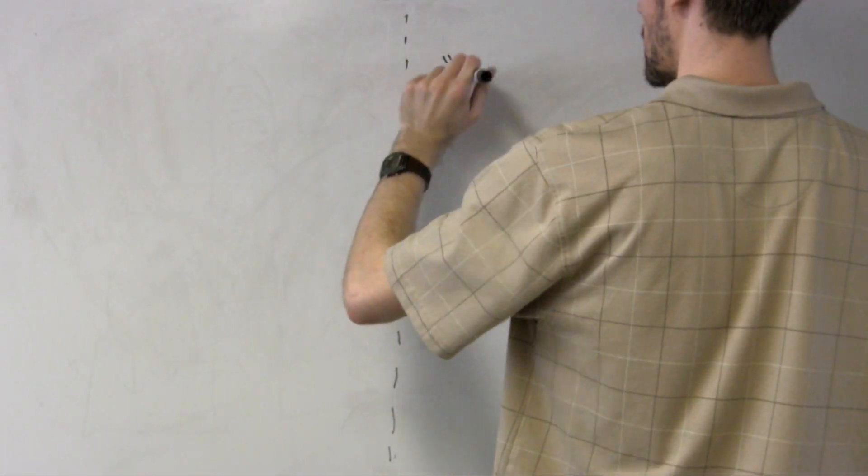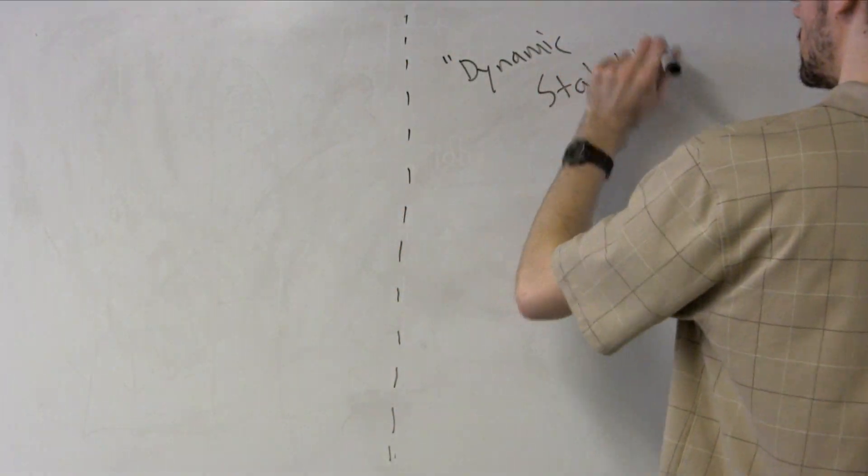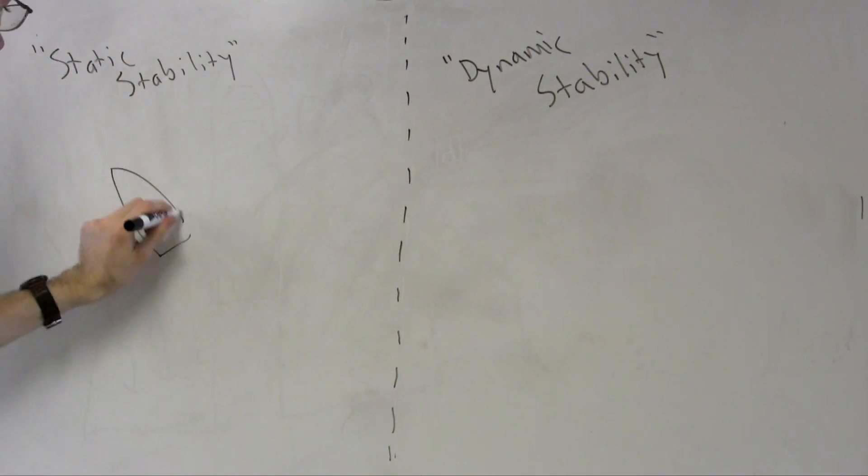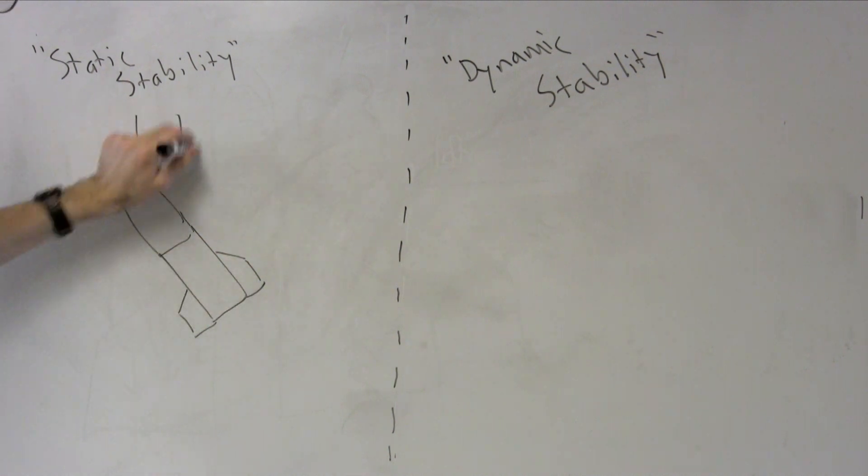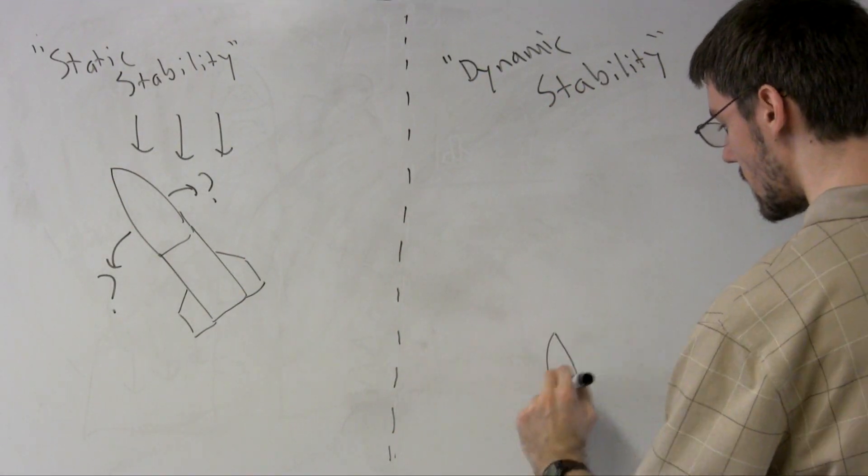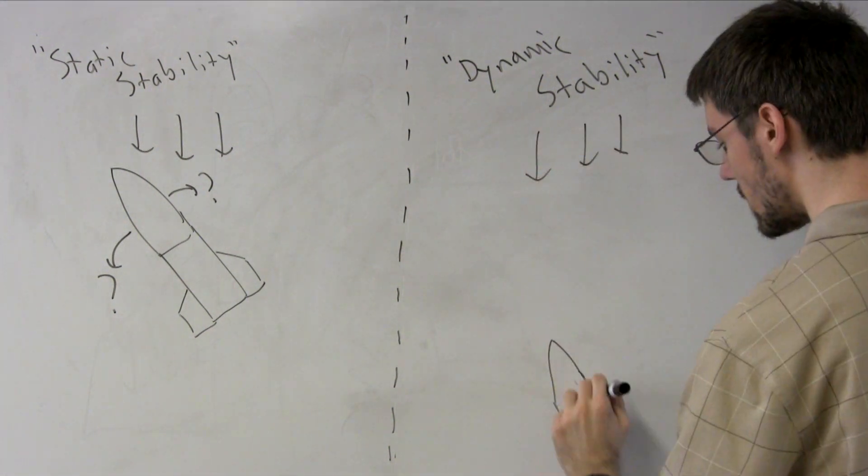Another limit is the concept of dynamic stability. Everything I have explained until now is called static stability. If we froze a rocket at a snapshot of time, would it tend to turn back to vertical or not? Of course, rockets don't fly in steps and snapshots. They have momentum, and it takes time for them to change.